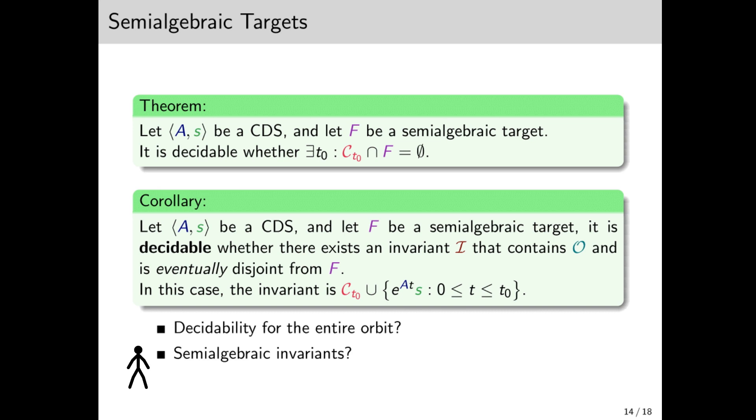So we have two issues to deal with. First is whether we can obtain decidability of invariants for the entire orbit, not just eventually. Second, the fact that even for semi-algebraic targets, we still end up with C_{t₀}, which is not semi-algebraic. That's kind of unfair. We'll start with the latter.